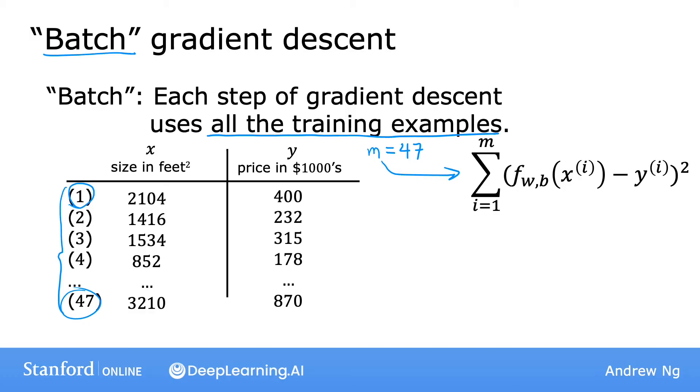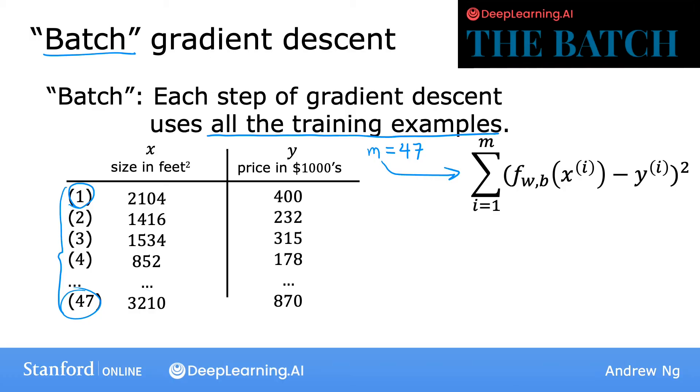If you've heard of the newsletter The Batch that's published by deeplearning.ai, it was also named for this concept in machine learning. It turns out that there are other versions of gradient descent that do not look at the entire training set, but instead look at smaller subsets of the training data at each update step. But we'll use batch gradient descent for linear regression.